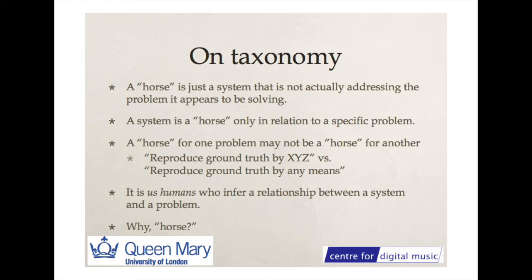Now we turn to taxonomy. A horse is just a system that's not actually addressing the problem it appears to be solving. A system is a horse only in relation to a specific problem — a horse for one problem may not be a horse for another. For instance, "reproduce the ground truth by some XYZ factor" versus "reproduce the ground truth by any means possible" are two different problems; one can be a horse for the first but not the second. Really, it's us humans who infer a relationship between a system and a problem.